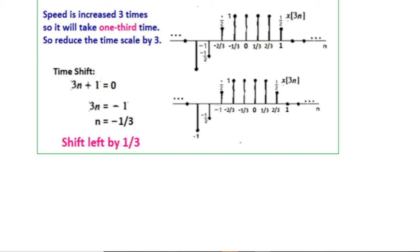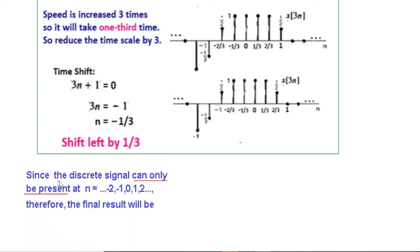Since the discrete signal can only be present at integer values of n (that is -2, -1, 0, 1, 2, 3...), the final result will only include values at these integer positions. Only the signal present at these integer points will be counted; all others will not be counted.